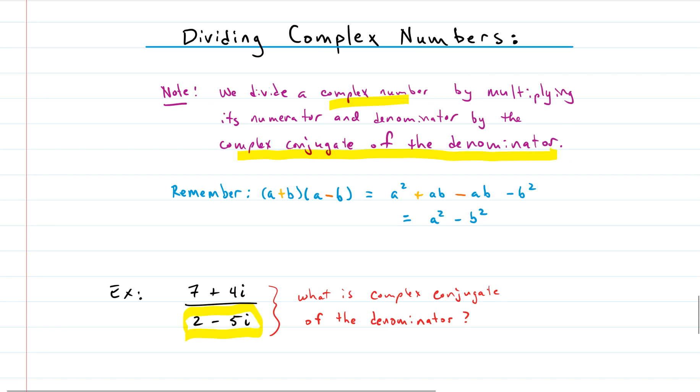So we look at the denominator and we say, what's the complex conjugate? We should probably answer that right away, right? So the complex conjugate is 2 plus 5i. So we take that complex conjugate of the denominator and we multiply top and bottom of this fraction by that complex conjugate. You might be thinking, why do we do that?